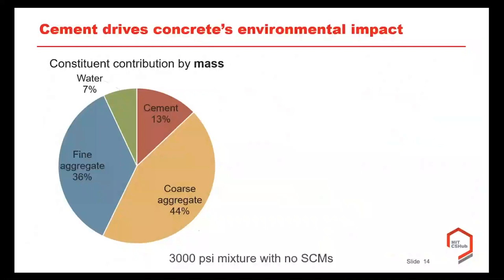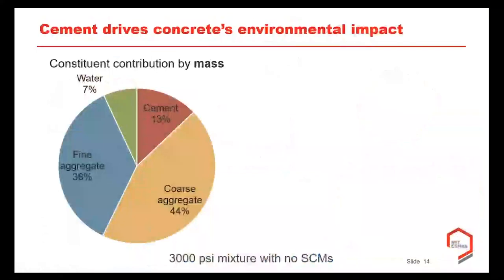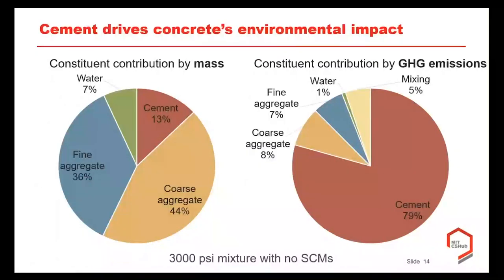By mass, most concrete is aggregate — either gravel or sand — which is one reason it's economical and has a low environmental impact, since it's mostly material dug from the earth without transformation. Cement is about 13% of a typical mixture. However, when we look at lifecycle greenhouse gas emissions, most of the impact comes from the cement. It's important to differentiate what's in concrete by mass versus by environmental impact.